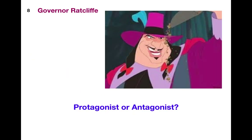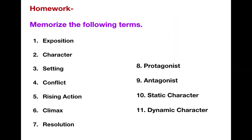Number 8 — Governor Ratcliffe from Pocahontas. Is Governor Ratcliffe a protagonist or an antagonist? Governor Ratcliffe would be an antagonist because he opposes the main characters — he opposes John Smith and Pocahontas, he opposes the Native Americans. He is a force that goes against them. Remember, anti means against.